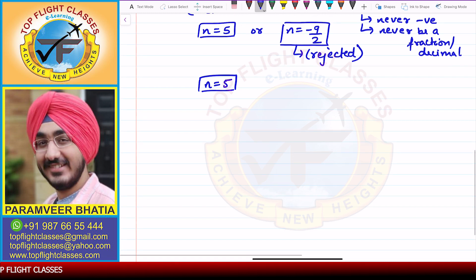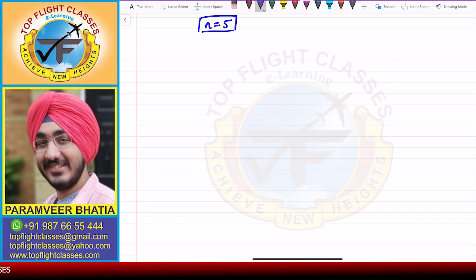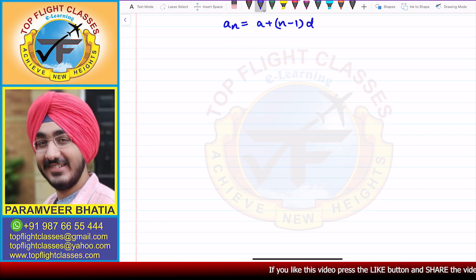The second thing to find is AN. We write the nth term formula: AN = A + (N minus 1) times D.